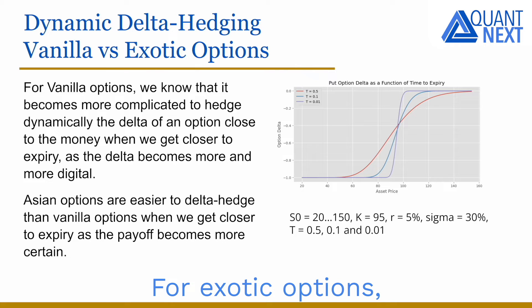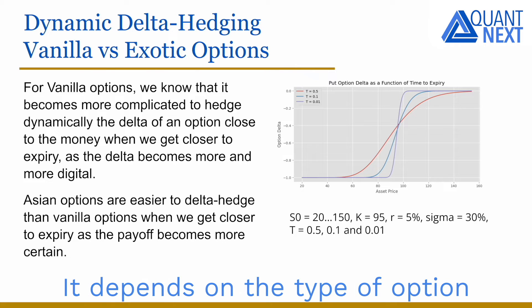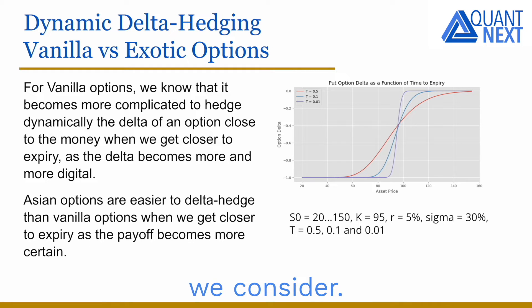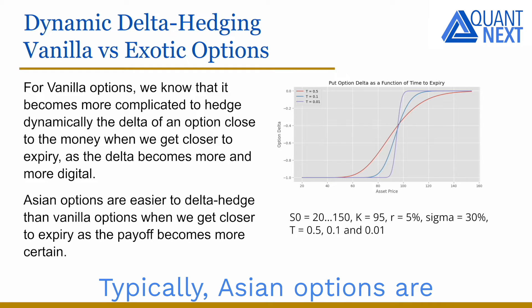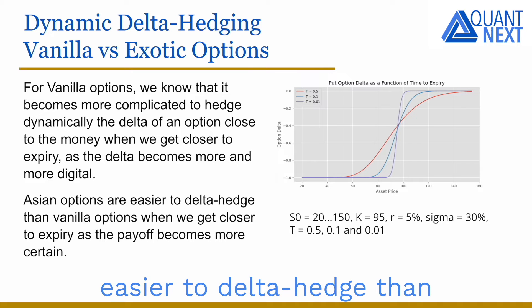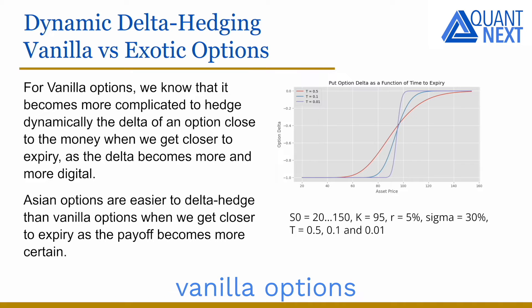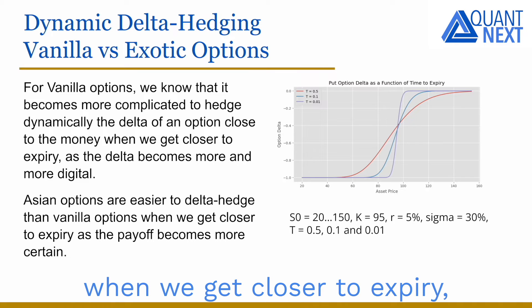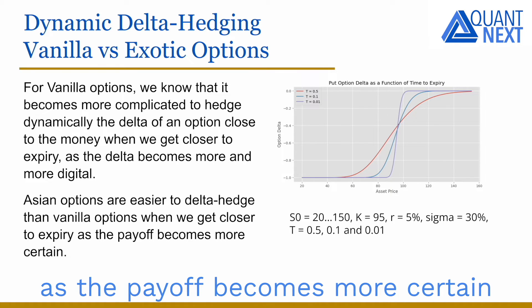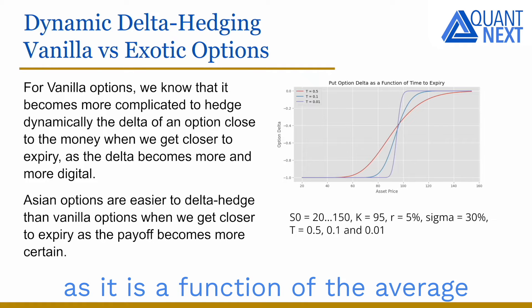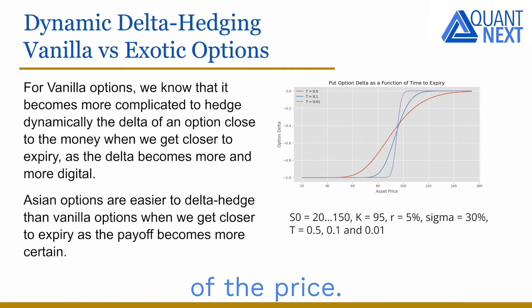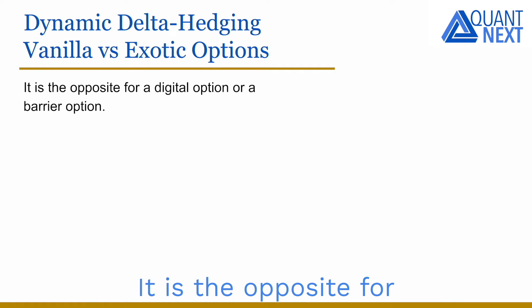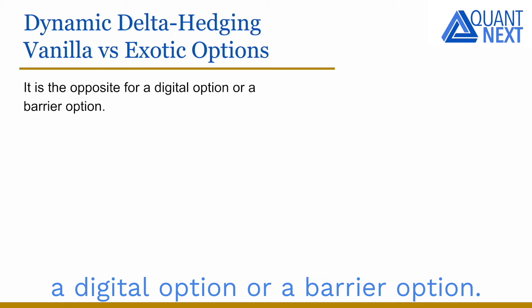For exotic options, it depends on the type of option we consider. Typically, Asian options are easier to delta hedge than Vanilla options when we get closer to expiry, as the payoff becomes more certain as it is a function of the average of the price. It is the opposite for a digital option or a barrier option.